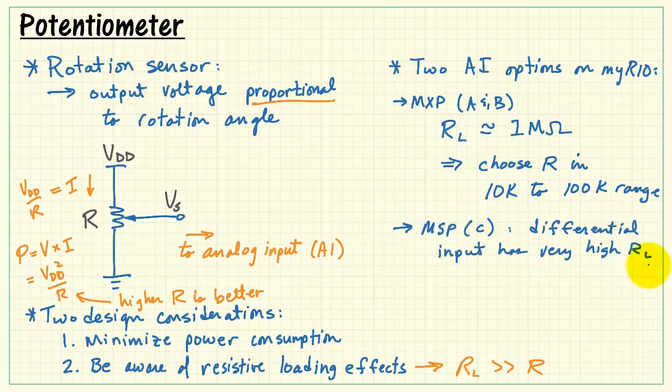On the MSP connector, or C connector, we have a differential input on the analog input. It has very high load resistance, on the order of about 4,000 megaohms.